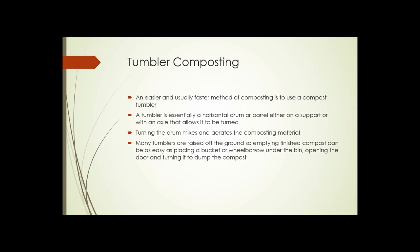Another type of composter is a tumbler-type composter — easier to use and usually faster than composting in a pile. It's essentially a horizontal drum or barrel, either sitting up on a support or with an axle that goes through it, allowing it to be turned. Turning the drum mixes the materials to be composted and aerates the composting material. Many tumblers are raised off the ground, so emptying finished compost can be as easy as placing a bucket or wheelbarrow under the bin, opening the door, and turning it to dump the compost.